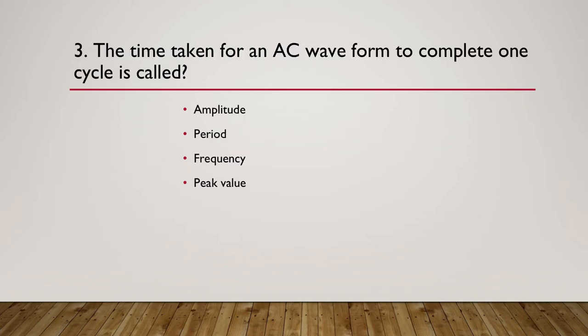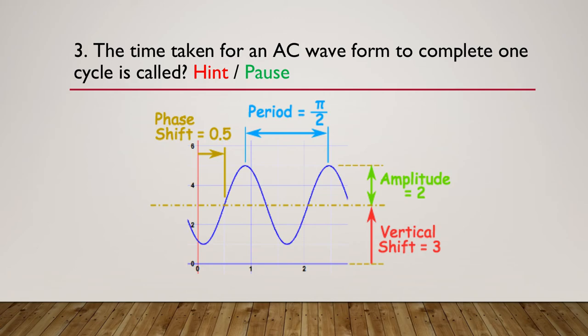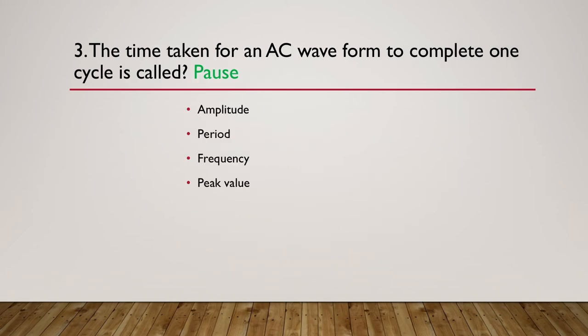So now question three: The time taken for an AC waveform to complete one complete cycle is called amplitude, period, frequency, or the peak value? And let's pause there.